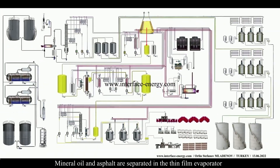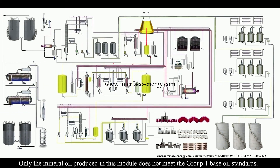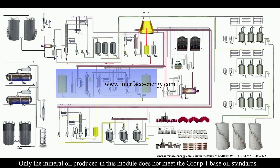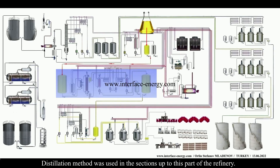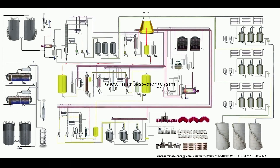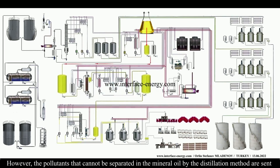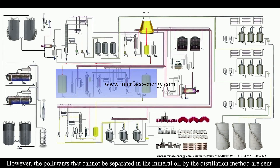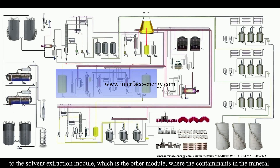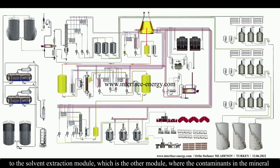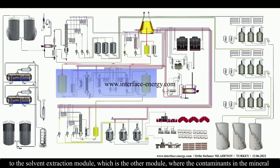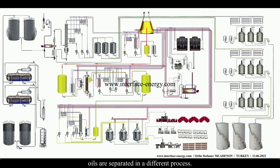Mineral oil and asphalt are separated in the thin film evaporator. However, the mineral oil produced does not yet meet Group 1 base oil standards. The pollutants that cannot be separated by distillation are sent to the solvent extraction module, where contaminants in the mineral oils are separated using a different process.